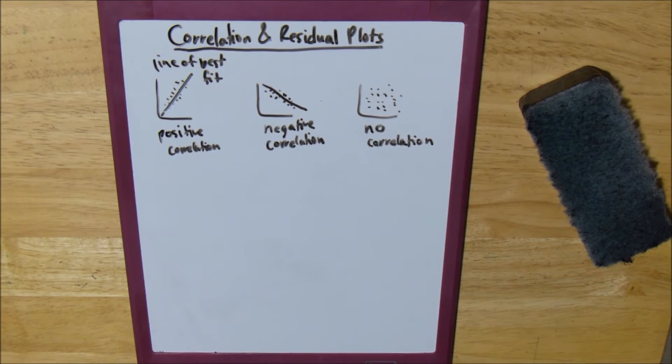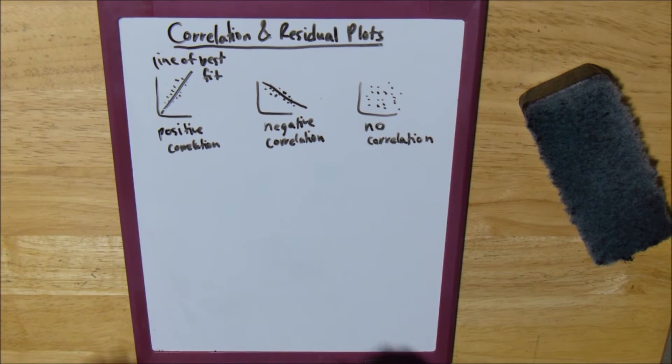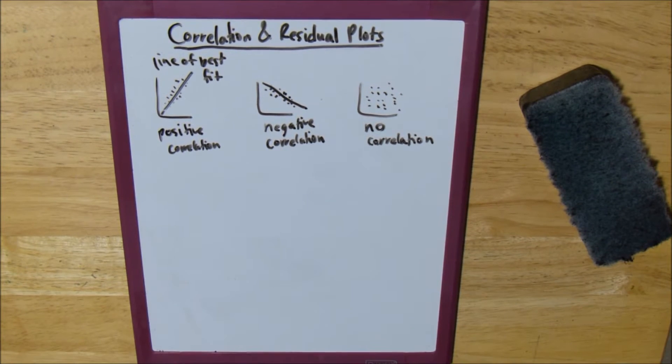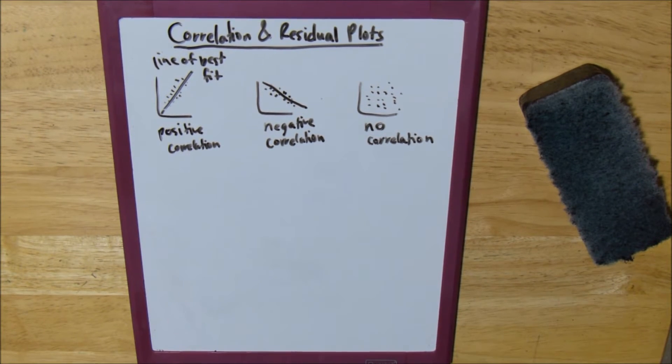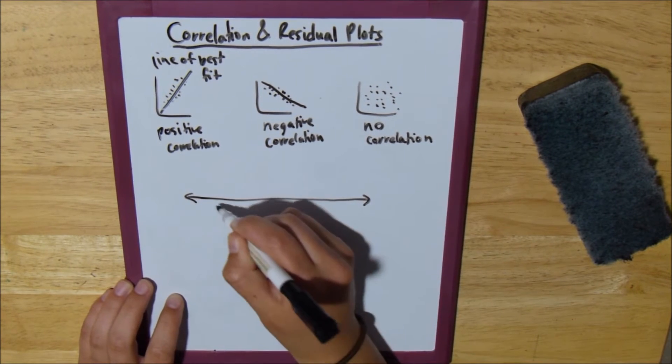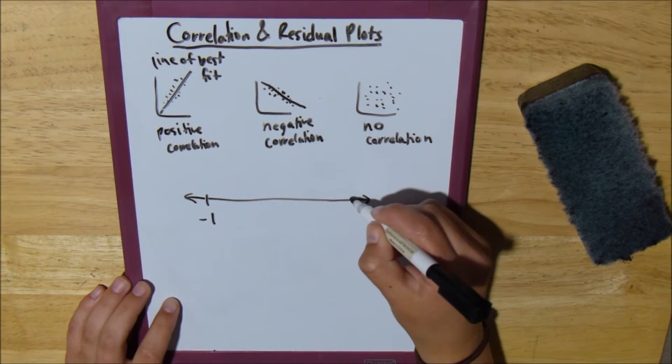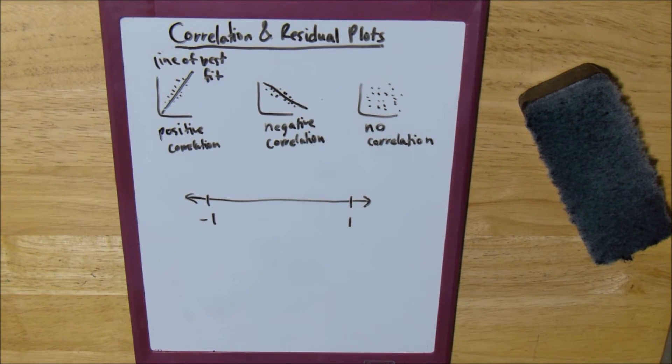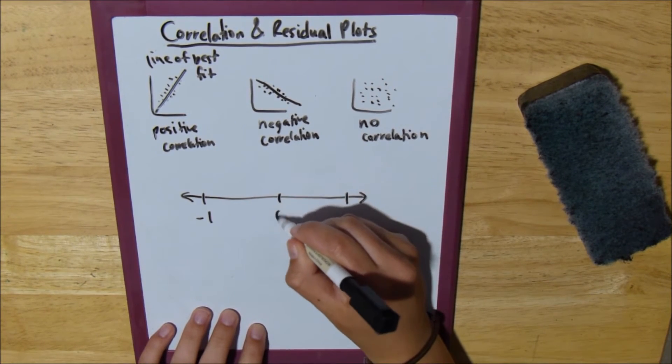And typically, we have this thing called a correlation coefficient, and it basically is the strength of the relationship, the strength of the correlation. So it's on a number line. So at one end, we have negative 1, and at one end, we have the other end, we have 1, and in the middle, we have 0.